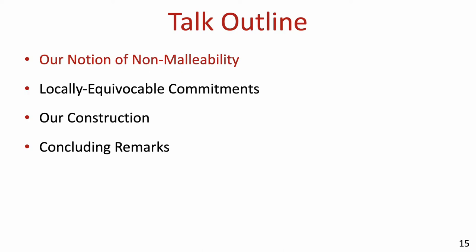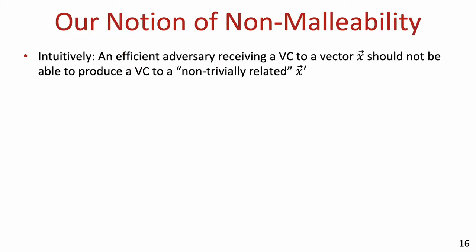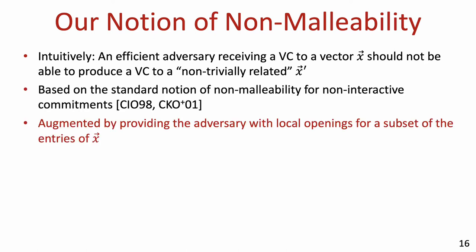Let's start by defining non-malleable VCs. Intuitively, at the most basic level, our notion of non-malleability asks that an efficient adversary receiving a VC to a vector x of elements should not be able to produce a VC to a non-trivially related vector x'. Our notion is based on the standard notion of non-malleability for non-interactive commitments, but we extend it to accommodate adversaries that observe local openings of the vector commitment to x for entries of their choice before having to produce their vector commitment to x'.